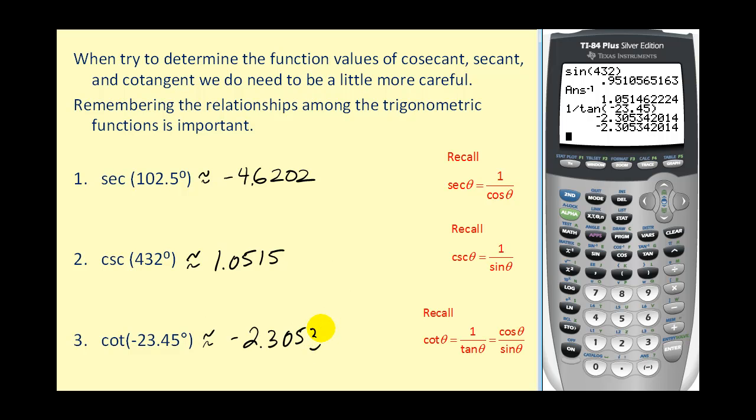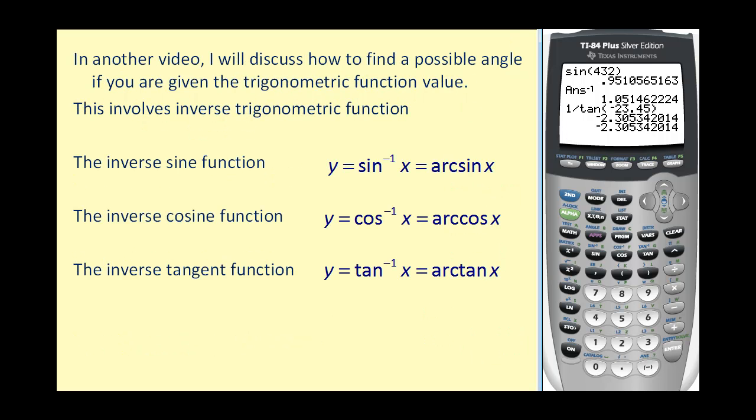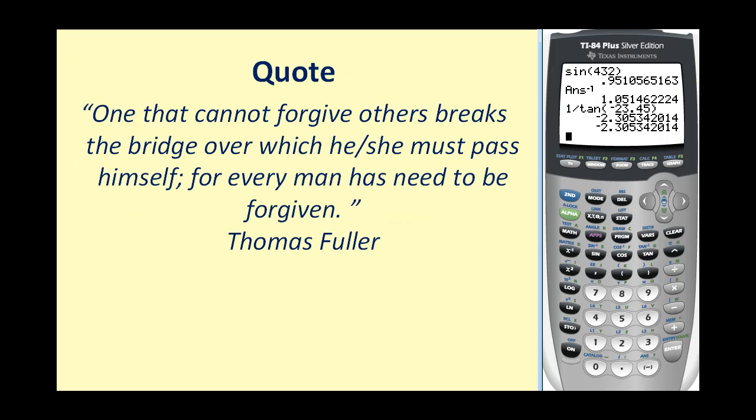That's pretty much it for finding trigonometric function values on the graphing calculator. In another video, I will discuss how to find a possible angle if you are given the trigonometric function value. That has to deal with inverse trigonometric functions, as we see here. The inverse sine function is written like this, or arcsine x. Inverse cosine function is written like this, or arccosine x, and similarly for the inverse tangent function. So that's what these three keys in blue are involved with. I hope you found this video helpful. Thank you, and have a good day.